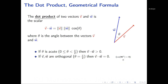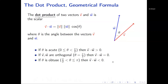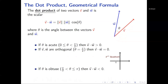This comes from cosine of 90 degrees equaling zero — if the angle between the vectors is 90 degrees, the dot product is zero. If theta is obtuse — between pi/2 and pi — then v dot w is less than zero. That's because in the second quadrant, cosine theta is negative, and since the other two factors are positive, the sign of the dot product follows the sign of cosine theta.